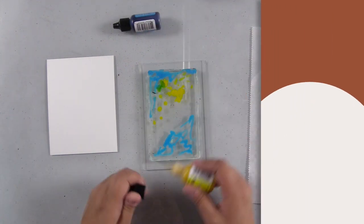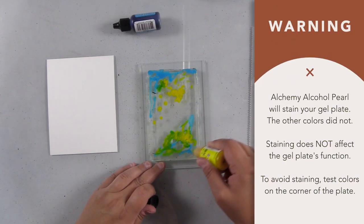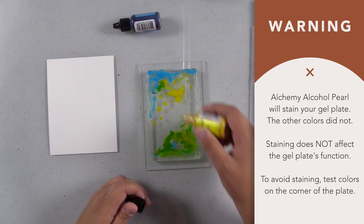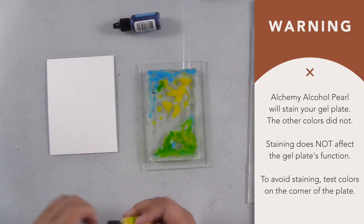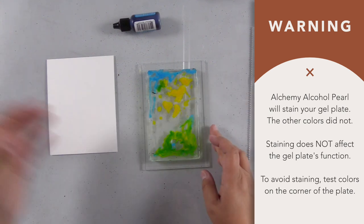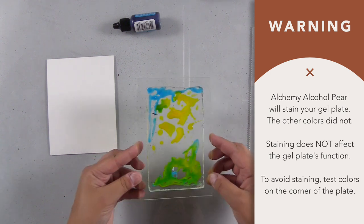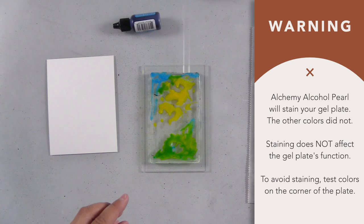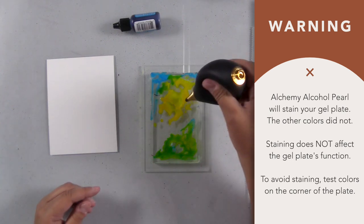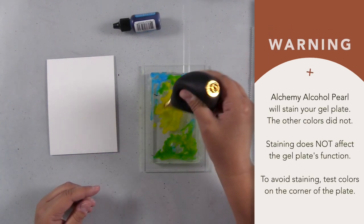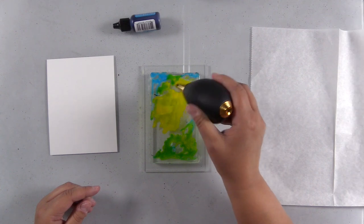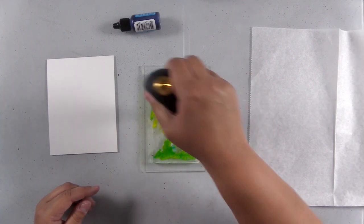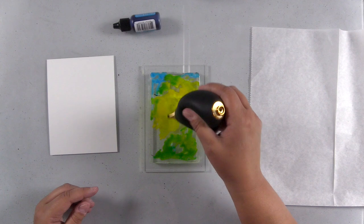I've used alcohol inks on my gel plates before, but this is the first time I've ever experienced any staining of my plate, and that happened with this alchemy color, the yellow alcohol pearl. None of the other colors stained my plates, and I've used alcohol inks, Ranger alcohol inks, and Copic marker refills, and I've never had any of them stain except for this alchemy Ranger color.